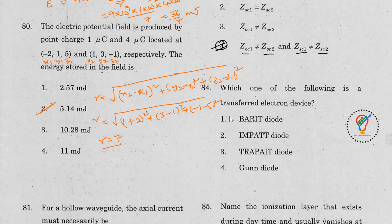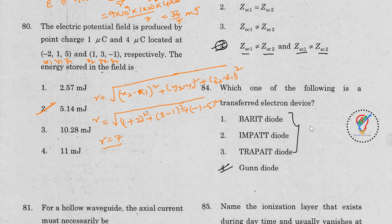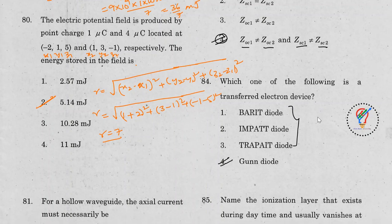Question 83: Which of the following is a transferred electron device? The answer is the Gunn diode. The remaining options — BARITT diode, IMPATT diode, and TRAPATT diode — are avalanche transit-time devices.